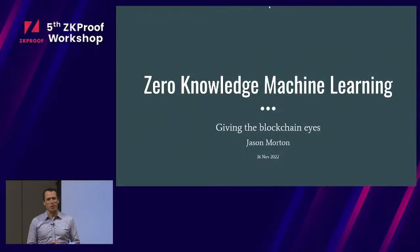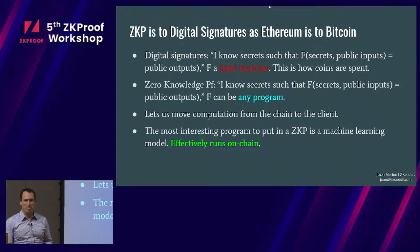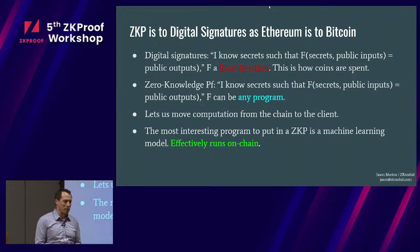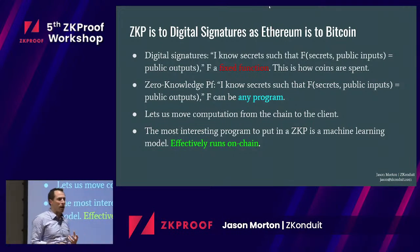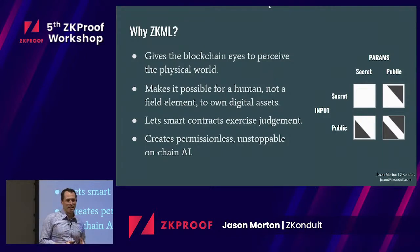I want to talk about zero-knowledge machine learning and my soundbite about it: we're trying to give the blockchain eyes. A zero-knowledge proof is to a digital signature as Ethereum is to Bitcoin. It lets us take the signature function and replace it with any program, and the thesis is that the most interesting program to put into a zero-knowledge proof is a machine learning program. It effectively makes it as though our model or AI is running on-chain — a way to give sense organs, eyes and ears, and a sense of touch to the blockchain.